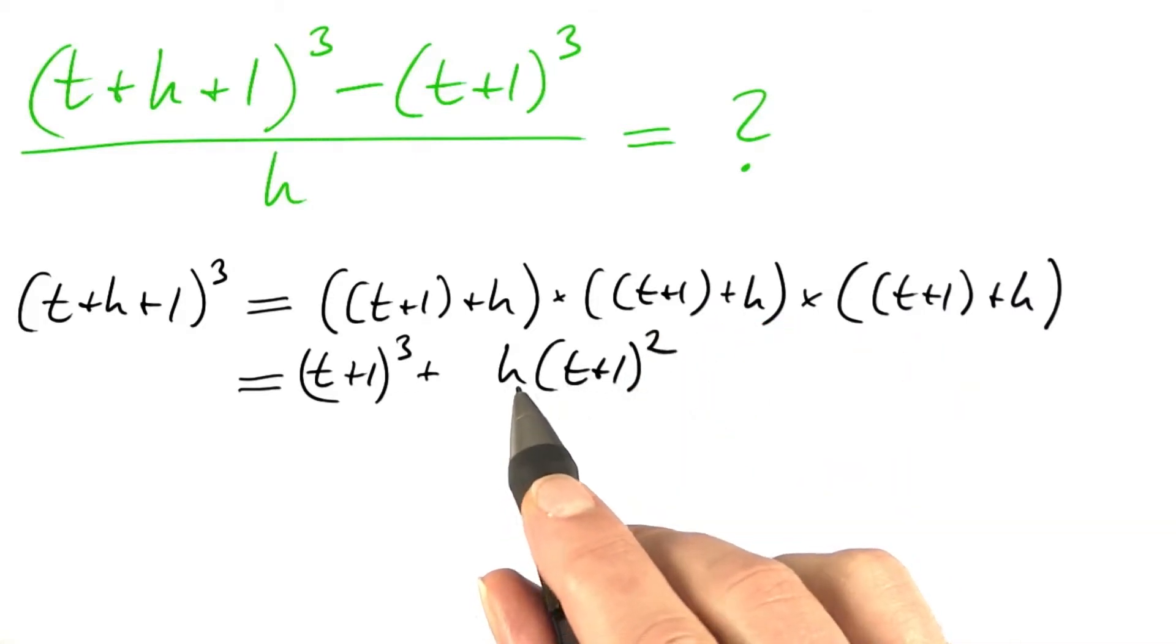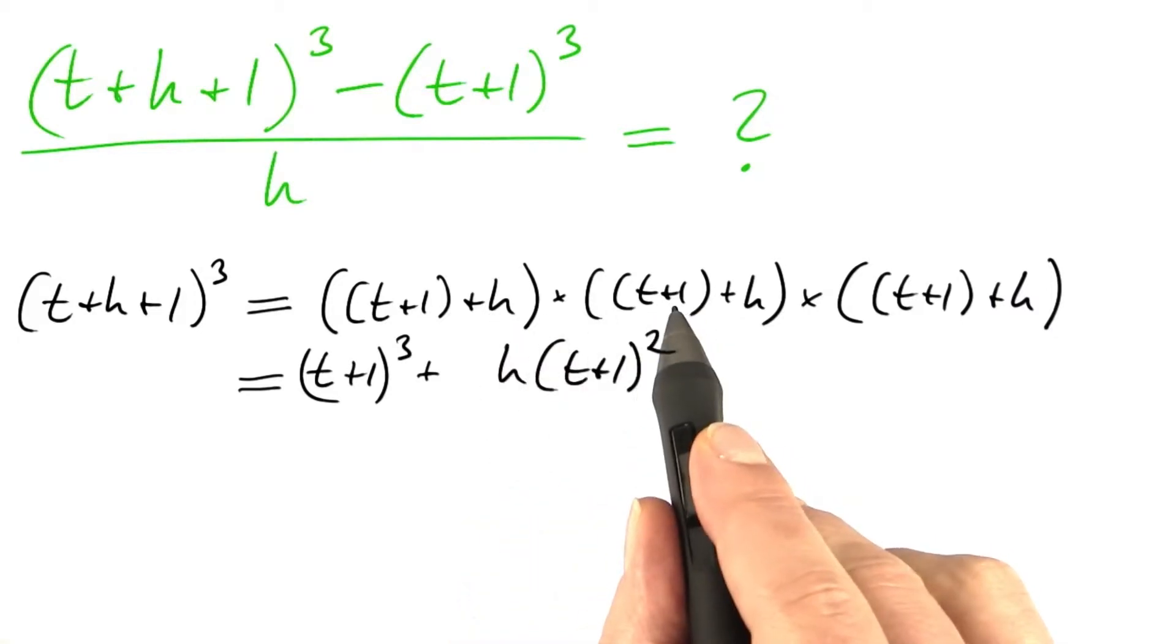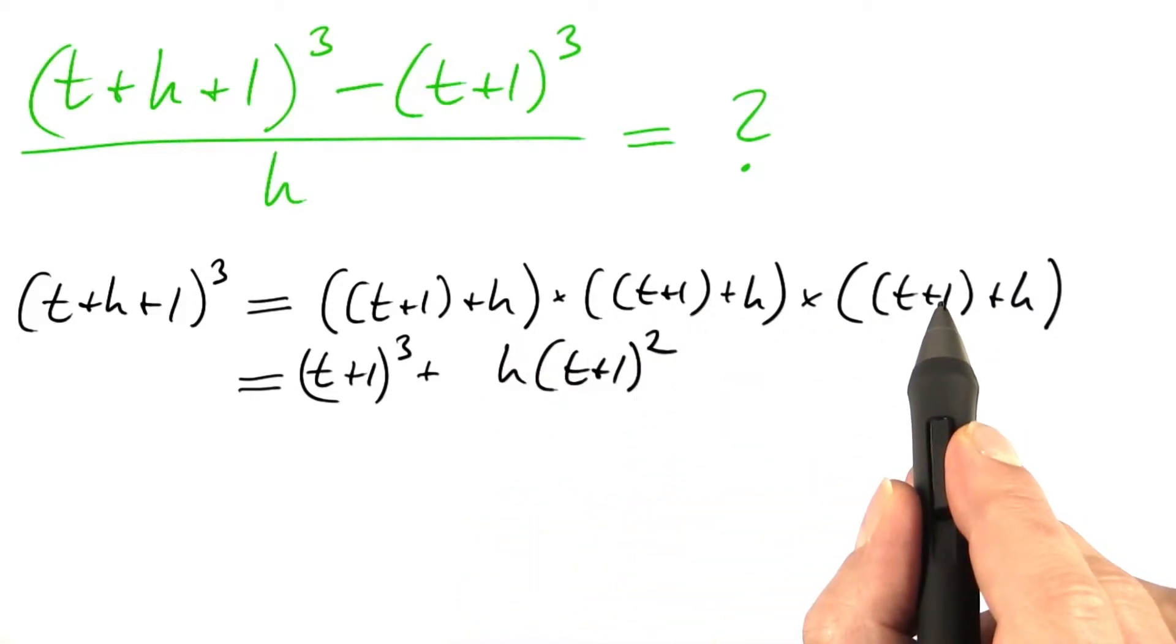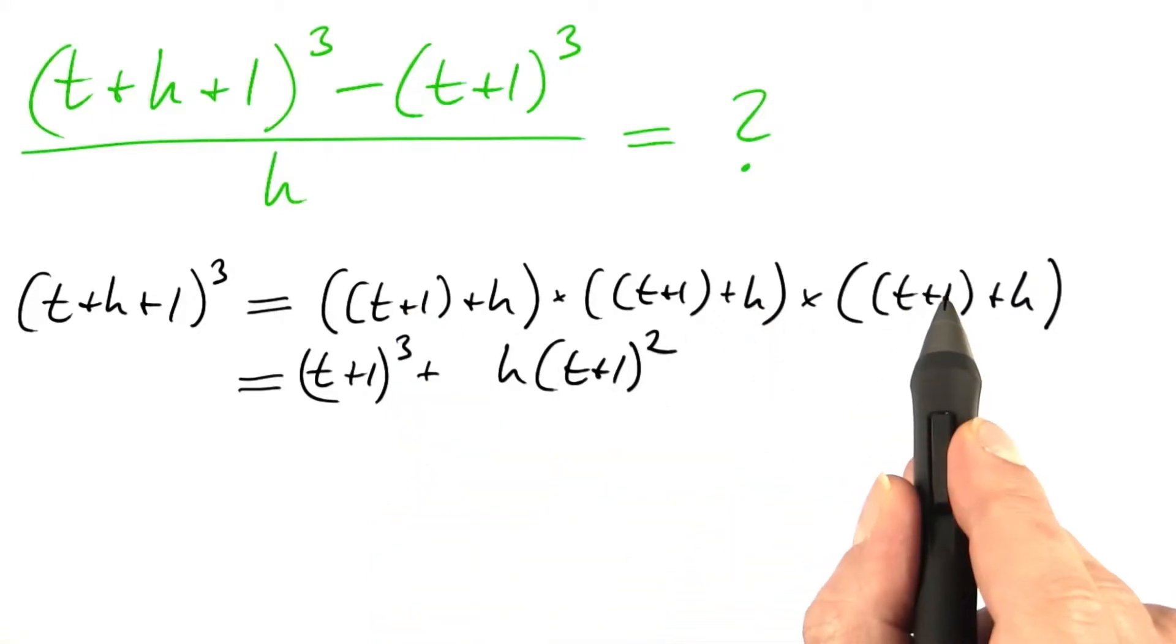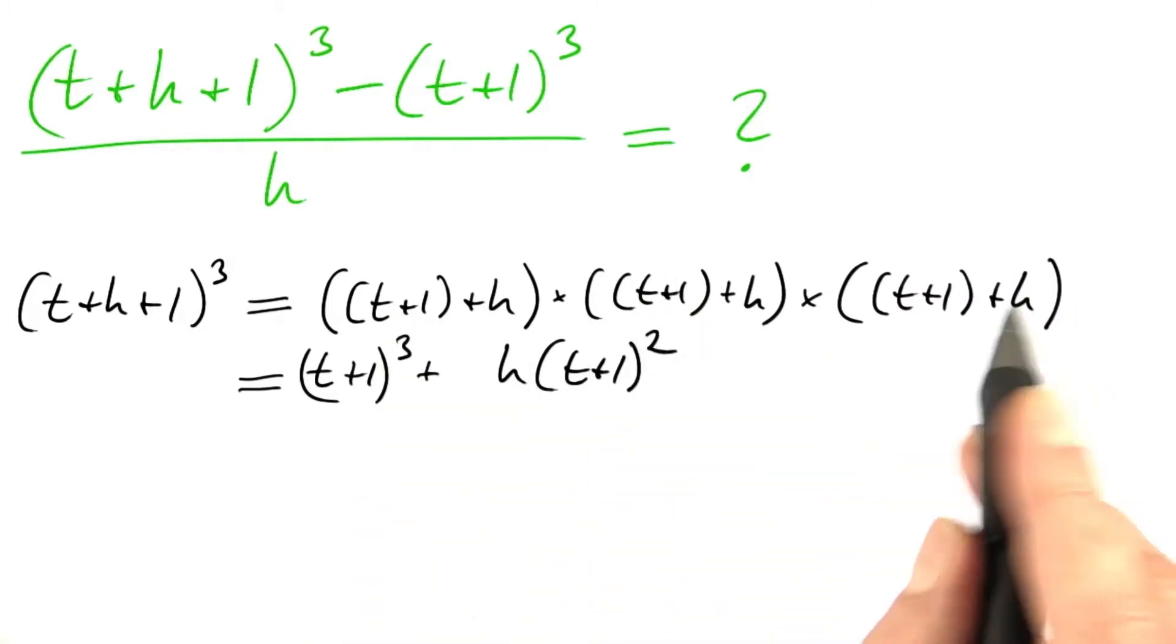How many terms of that sort do I get? h times this one times this one is one of that sort. t plus 1 times h times t plus 1, second one, and t plus 1 times t plus 1 times h, a third one.